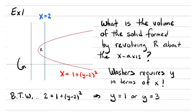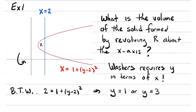Let me motivate it with an example. Here I've got a region R. It's bounded by a red parabola and a blue line. The blue line is a vertical line — its equation is x equals 2. The parabola is not a function of x but rather a function of y, given by that quadratic expression. And I want to rotate this thing about the x-axis and find the volume.